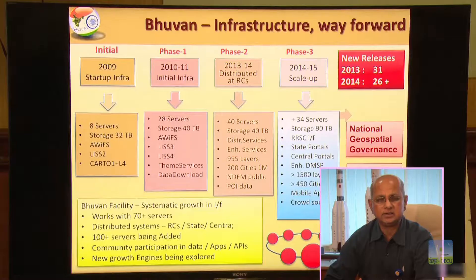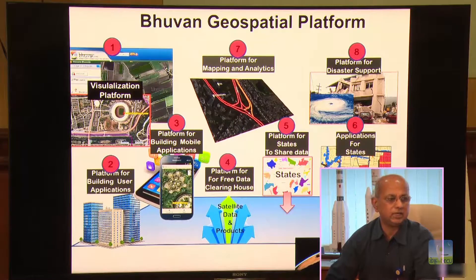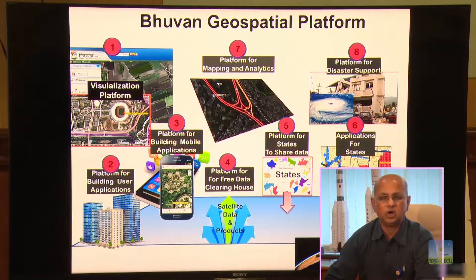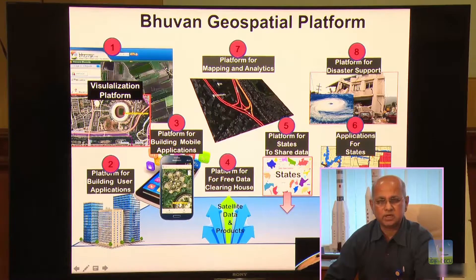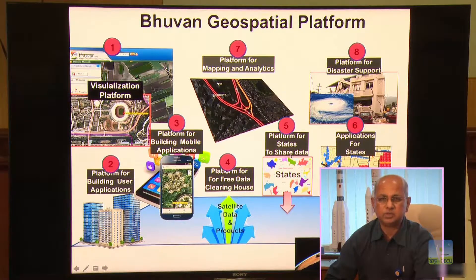It particularly started off as a visualization platform, but down the line we have moved into the mobile platform — we have more than 60 to 70 mobile applications that are operational on Bhuvan. In addition to that, large numbers of maps and map analytics are possible, and there are state-based platforms wherein respective state governments will be able to use this data for state-specific purposes. The state governments can build over it by putting their own data and inserting onto the system. Very interestingly, Bhuvan has also got a one-stop shop for all the kinds of disasters the country faces — it is a very good platform for disaster management support.